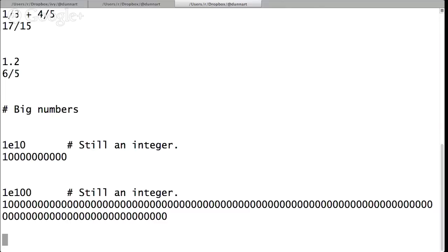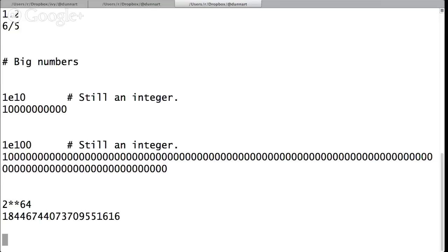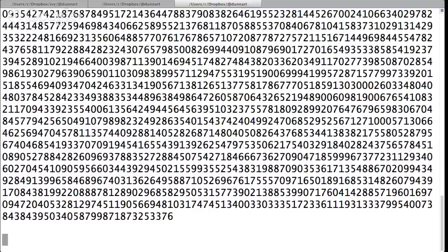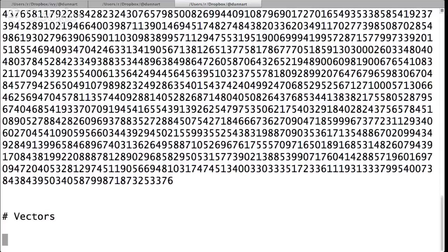And it can do really big numbers. See, 1e100 is a number. 1e100 is actually still an integer. 2 to the 64th is an integer. That's what we want, right? 2 to the 640 is also an integer. Actually 2 to the 6400 is also an integer. These are useful numbers for certain cryptographic calculations, right? Which is why I did it.